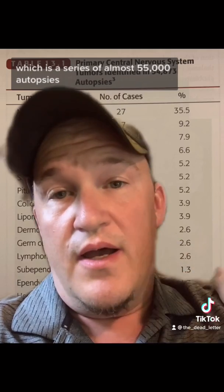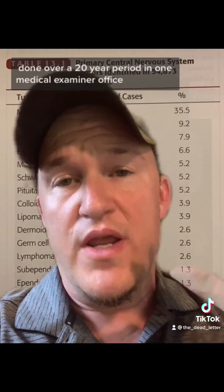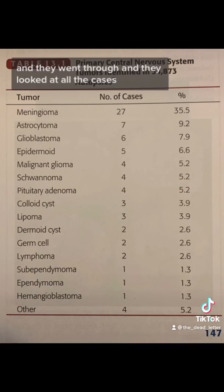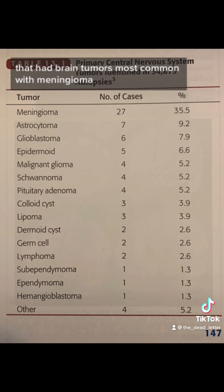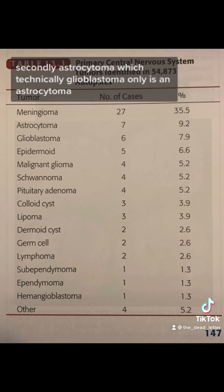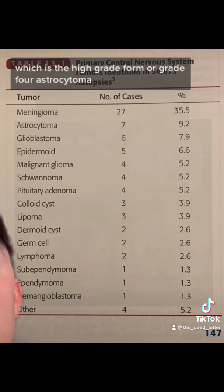This table behind me shows a series of almost 55,000 autopsies done over a 20-year period in one medical examiner office, where they looked at all cases that had brain tumors. The most common was meningioma, which is a benign brain tumor. Second was astrocytoma — and technically glioblastoma is an astrocytoma. Third was glioblastoma, which is the high-grade form, or a grade 4 astrocytoma.